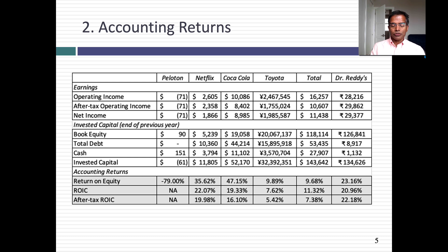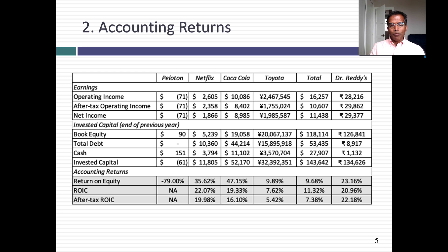As the companies mature, the return on equity does change. Netflix and Coca-Cola have the highest returns on equity — reflecting, for Netflix, that it's a growth company, and for Coca-Cola, that it's a business with substantial competitive advantages. Toyota and Total have single-digit returns on equity. And Dr. Reddy's return on equity bounces back. Looking at return on invested capital, you see the same pattern: Netflix and Coca-Cola have the highest returns on capital; Toyota and Total are much lower; Dr. Reddy's is high. And for Peloton, invested capital becomes a negative number, because the cash actually exceeds book equity plus debt.